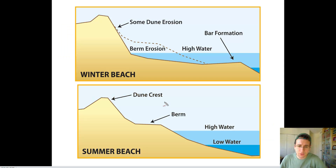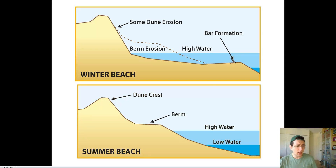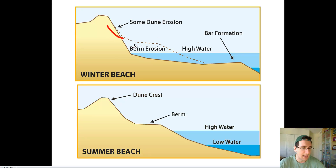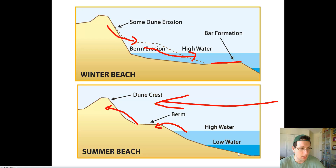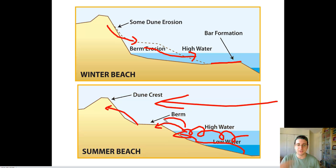Some beaches go through cycles throughout the summer and winter months. During winter, when wind is mostly blowing away from the continents, you're going to have dunes eroded into berms, berms collapsing into the water, and the formation of bars. But then on the summer beach, when the wind flows the other way and there are fewer storms, you're going to have more dune formation from the berm, more berm formation from waves, and the destruction of the bar to form the berm — because waves cut through the bar and deposit that material into the berm. So you can see how the beach can go through a cycle of erosion and formation.